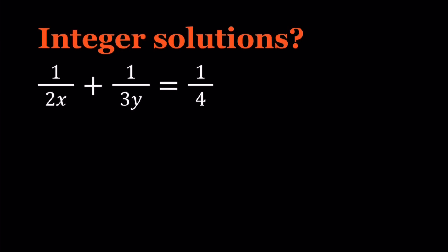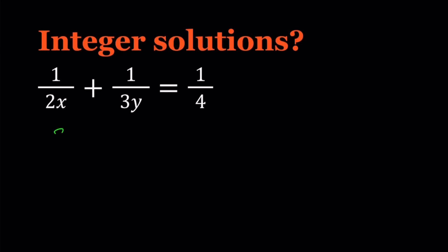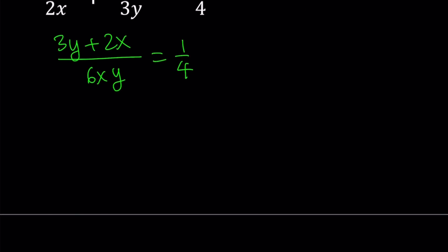I'm going to start off by making a common denominator. Let's go ahead and make one. We can actually simplify this a little bit if you want. Divide by 2, you're going to get a 3 here and a 2 here. And after that I can just go ahead and cross multiply.